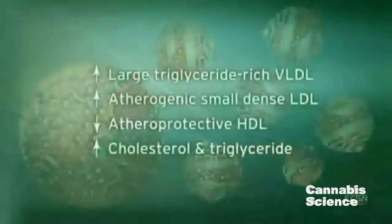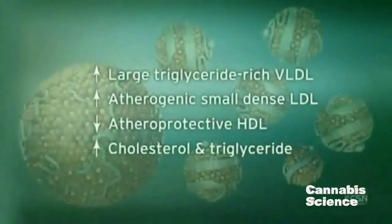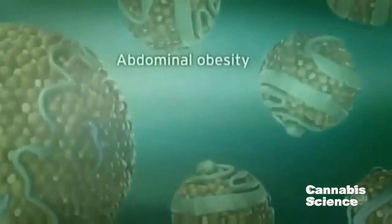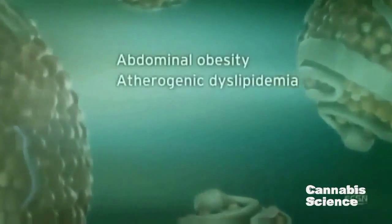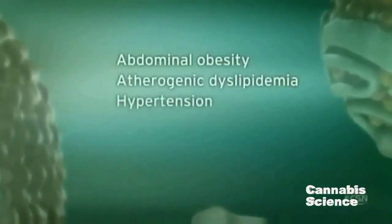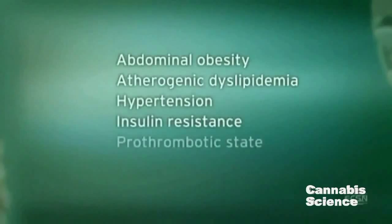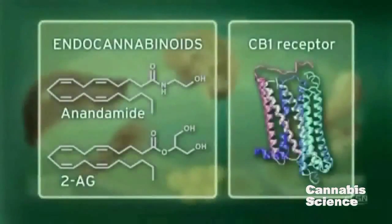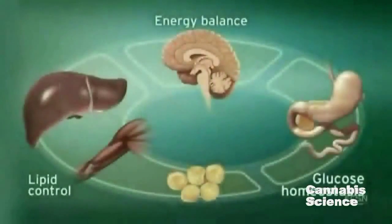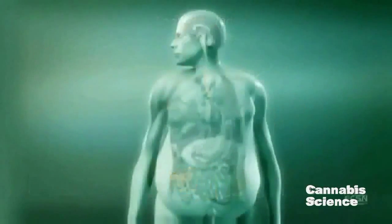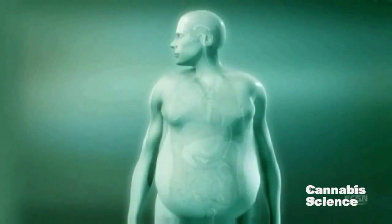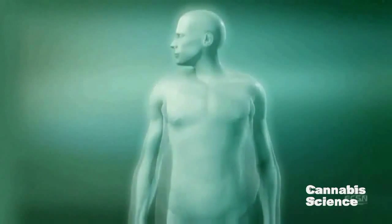Metabolic dysregulation leads to a constellation of symptoms including abdominal obesity, atherogenic dyslipidemia, hypertension, insulin resistance, pro-thrombotic state, and pro-inflammatory state. As basic and clinical research progresses, we will continue to increase our understanding of the central and peripheral endocannabinoid system and its role in the regulation of metabolic function.